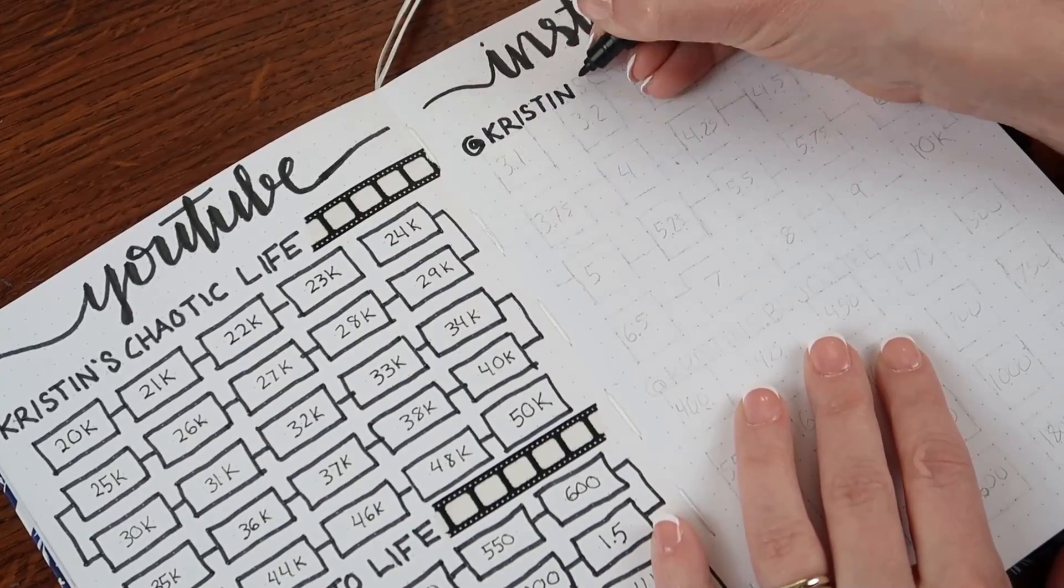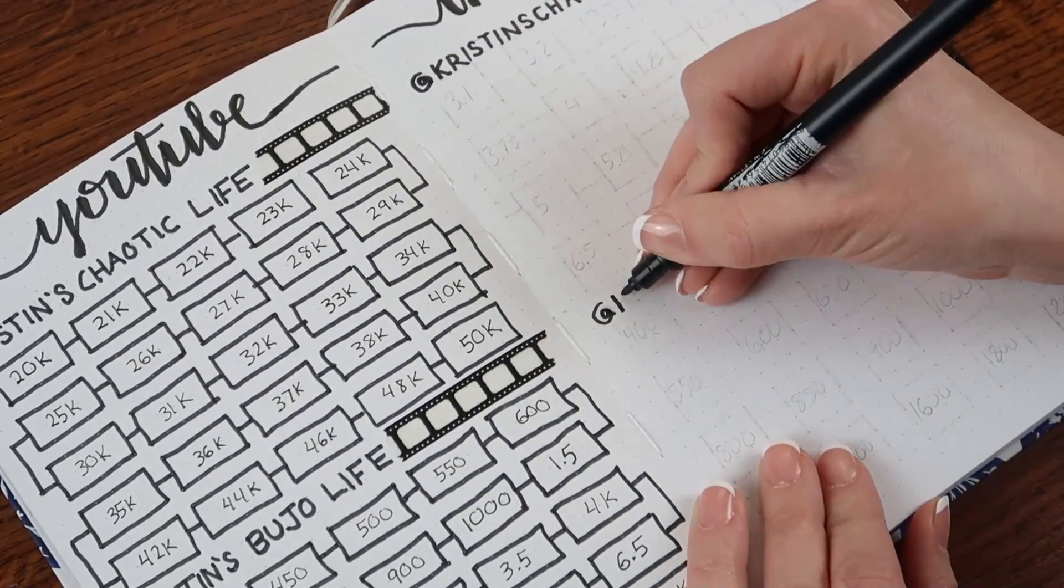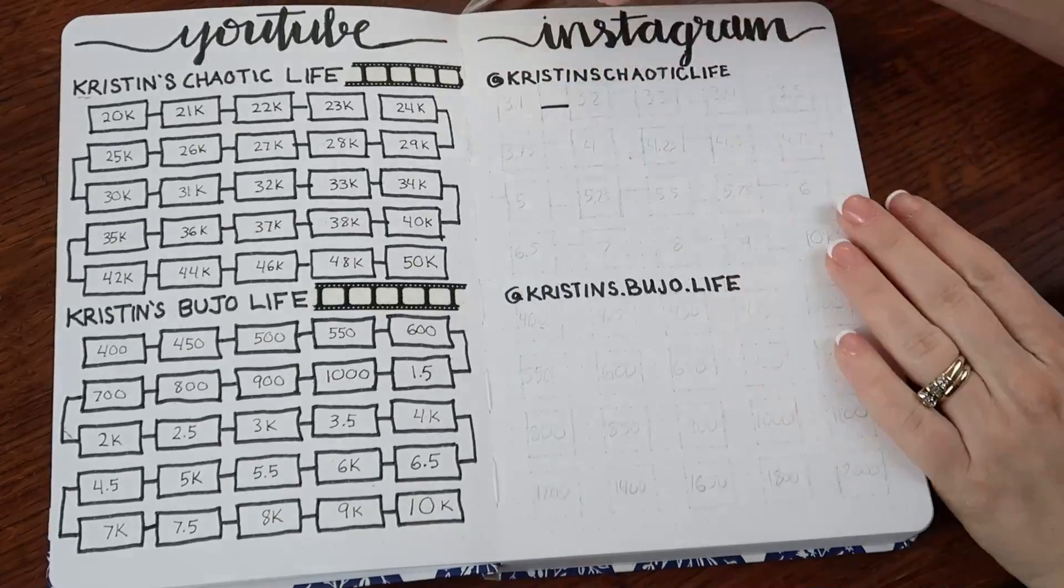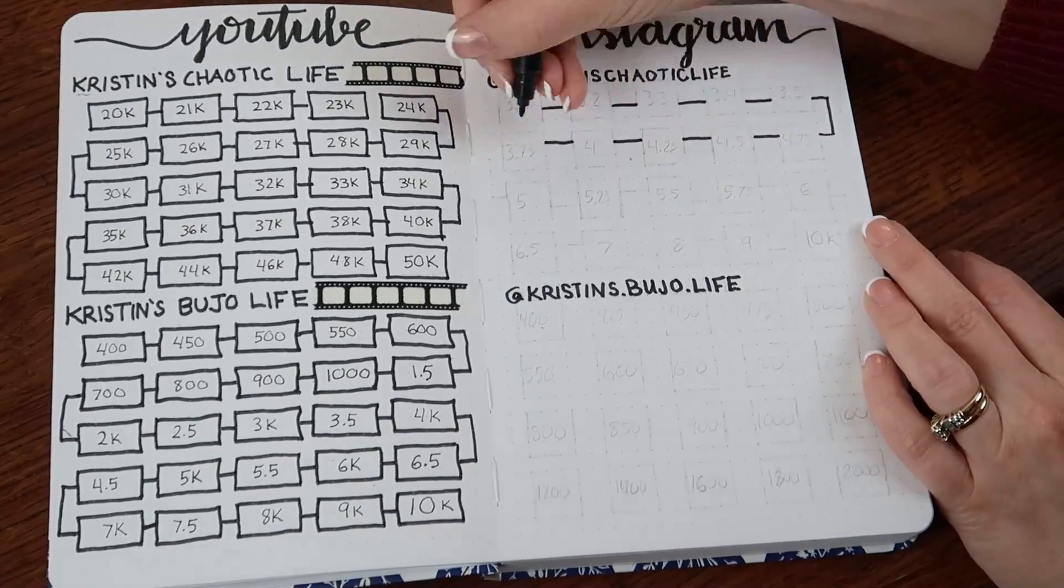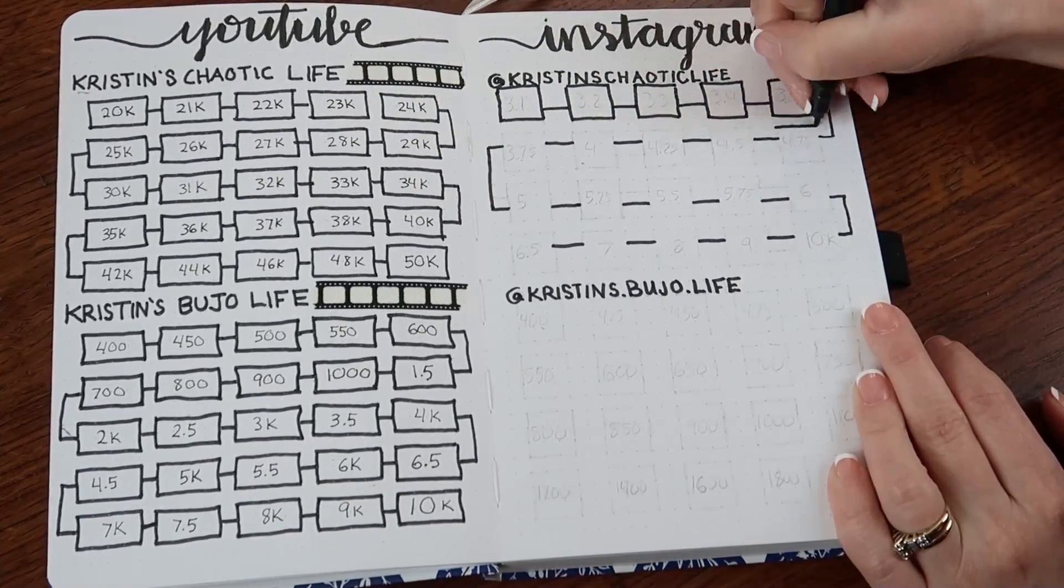So for my Instagram, I grow a lot slower on Instagram, and I'm not the best at posting on there all the time. So that's one thing for 2020 that I really want to focus on as well, growing my Instagram and my Pinterest account. But I don't have a tracker for there on here yet. I may add that later.